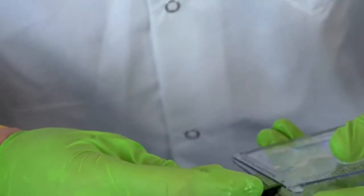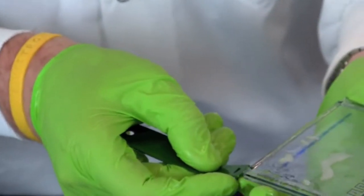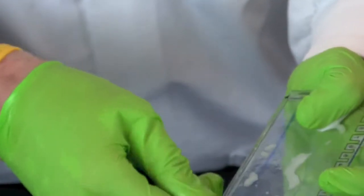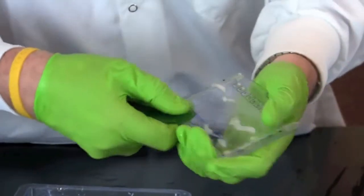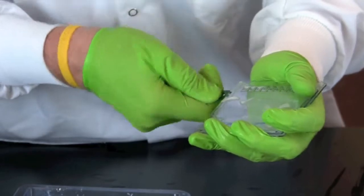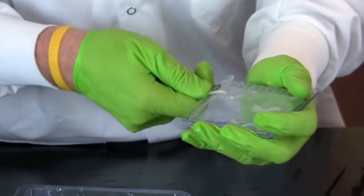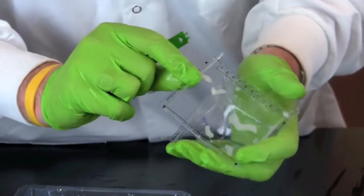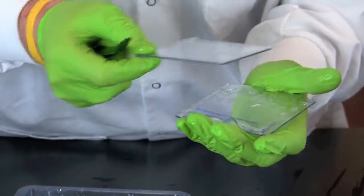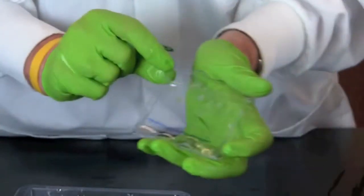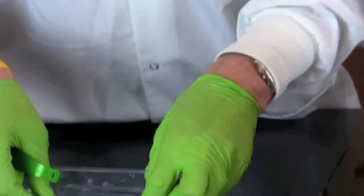Remove the gel from the gel cassette using the opening key. Line up the arrows on the opening key with the four arrows on the cassette to open the cassette. Very gently transfer the gel into a staining tray filled with tap water.